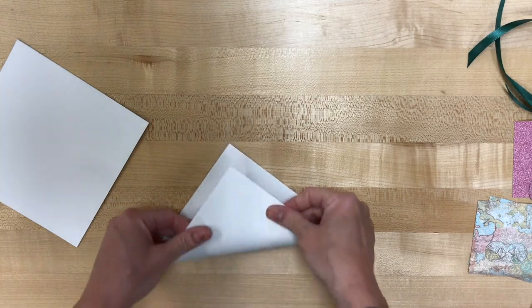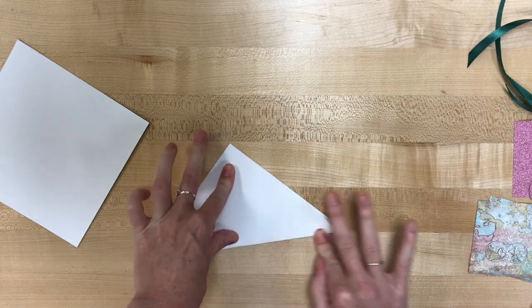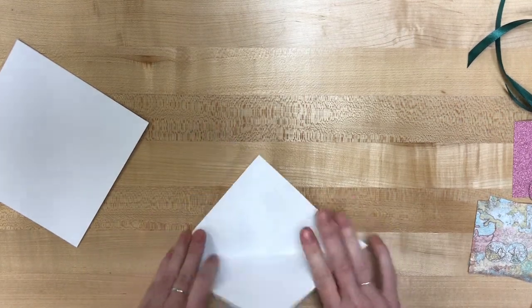Open that one up and then with it like a diamond you're now gonna take the bottom corner and fold it up to the top corner. So we're gonna put a nice diagonal fold in that sheet as well.